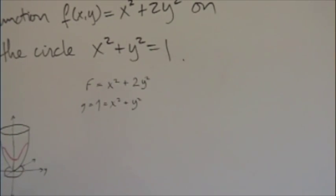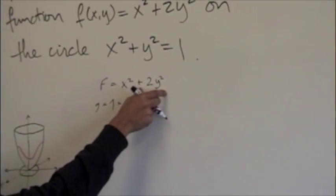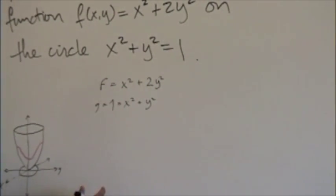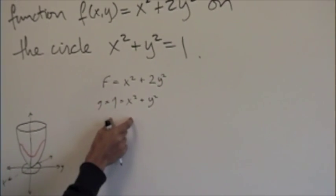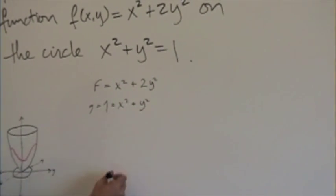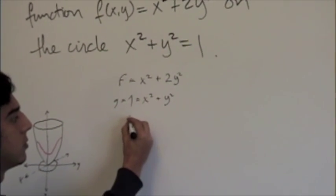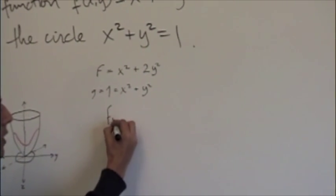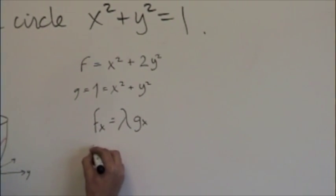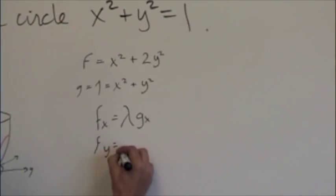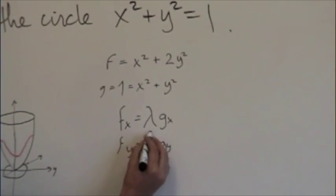What we do here is we take the partials with respect to x and the partials with respect to y of the general function, and we say that's going to be equal to the partials of g with respect to x and the partials of g with respect to y, times a multiplier that we're going to call lambda. So this will be f_x = λg_x and f_y = λg_y. These are Lagrangian multipliers.